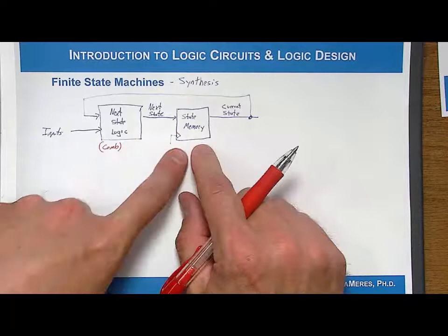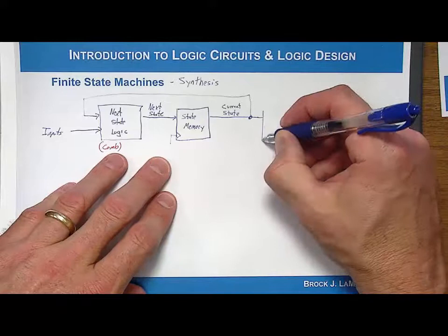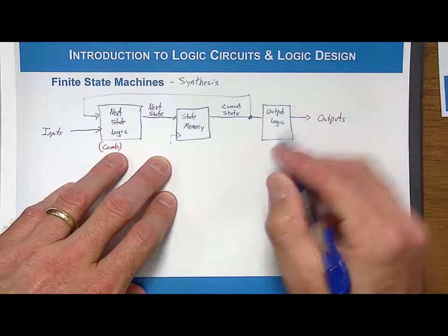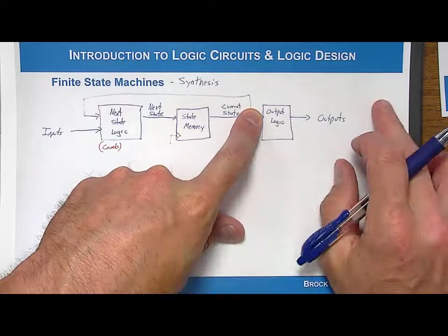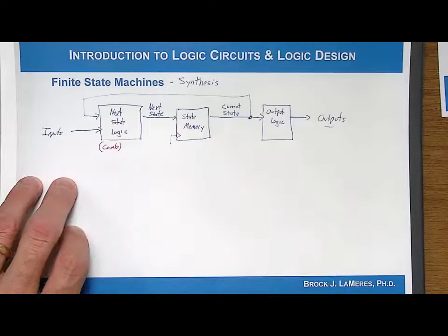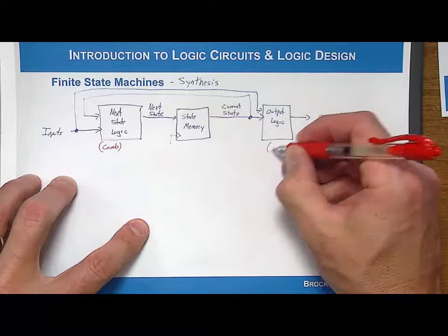Our system doesn't have an output yet, so we also need a block called output logic, which produces the system outputs. The output logic always looks at the current state — if it didn't, it wouldn't be a circuit associated with the finite state machine. It's the circuitry that produces the outputs based upon the current state, and sometimes it can also look at the inputs. It's important to note that output logic is also combinational logic. So the next state logic and output logic blocks are combinational circuits, and the state memory block contains D flip-flops.